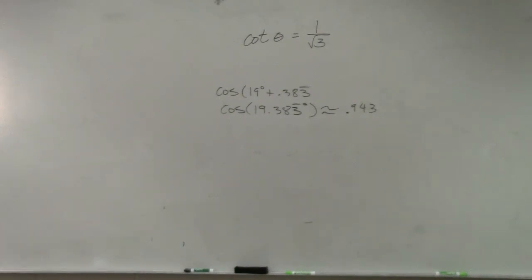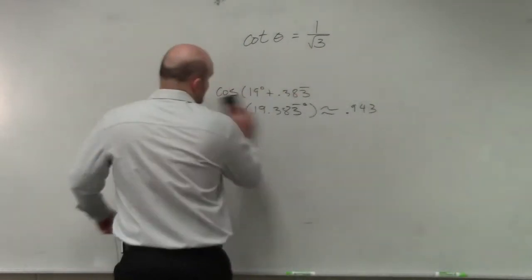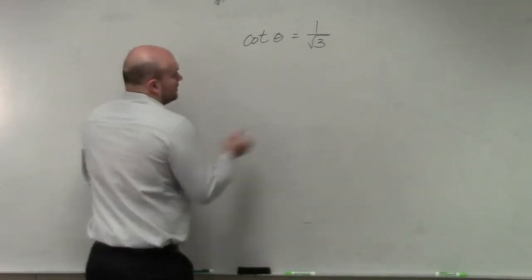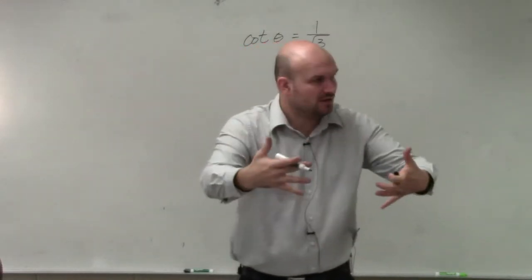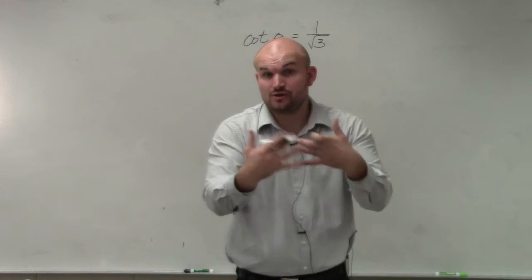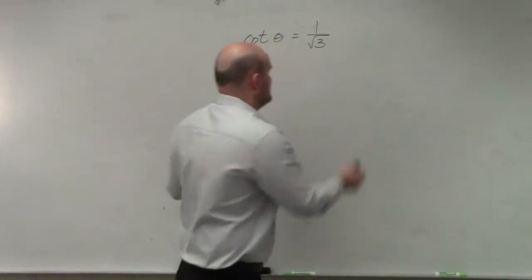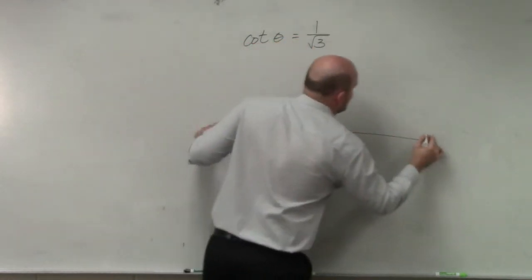You really need to know your unit circle. I'm only going to make sure you guys have your first quadrant prepared. This question is asking, what is the angle where cotangent, which is x over y? If we think about our unit circle, the first quadrant at least, we know we have these angles.